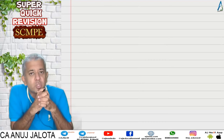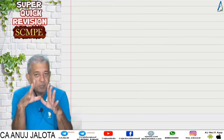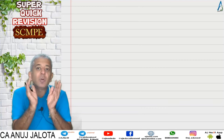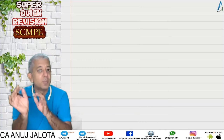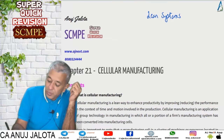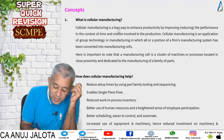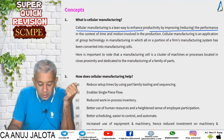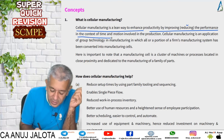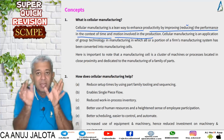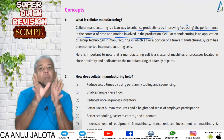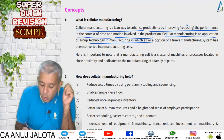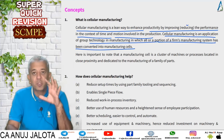Group technology is where we combine machines together so there is no unnecessary movement of materials and no unnecessary movement of people. It tries to avoid wastages by organizing the factory in such a way that movement of workers and materials is minimized. Cellular manufacturing is a lean way to enhance productivity by improving or reducing the time and motion involved in production. Cellular manufacturing is an application of group technology in manufacturing in which all or a portion of a firm's manufacturing system has been converted into manufacturing cells.